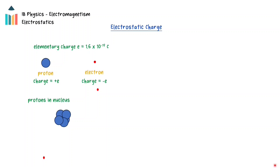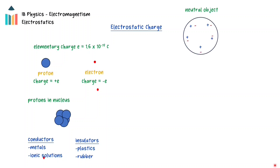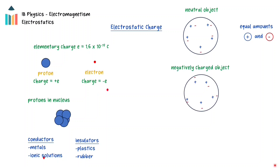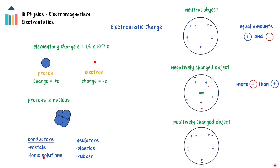Materials that allow charges to move easily through them are called conductors, and materials that strongly resist the flow of charge through them are called insulators. An object with an imbalance of positive and negative charges is referred to as electrically charged. A neutral object contains an equal number of protons and electrons. A negatively charged object has more electrons than protons, and a positively charged object has lost electrons and so has fewer electrons than protons.